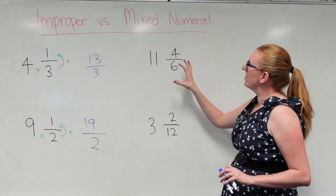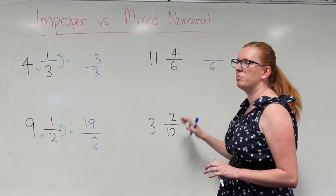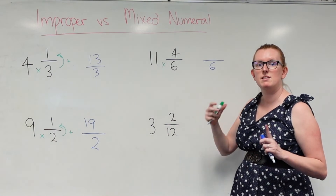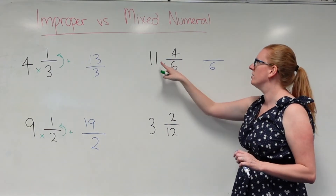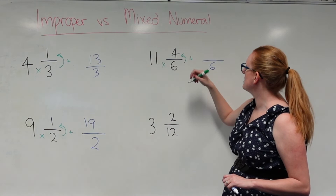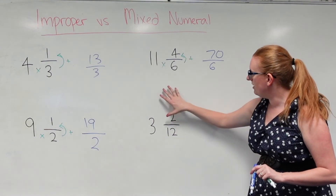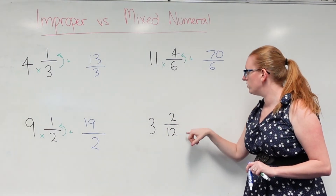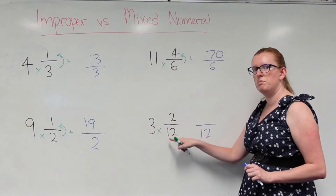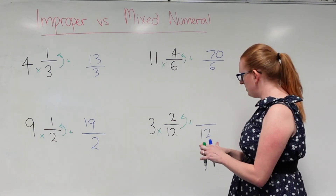Here I've got 11 and 4 over 6. I know my denominator is going to stay the same — it's going to be 6. I need to multiply 11 times 6 to find out how many slices were in the 11 eaten: 11 times 6 is 66, and then I add 4. So 66 plus 4 gives me 70 over 6. For this one down here I've got 3 whole and 2 over 12, so my denominator is going to be 12. Three 12s are 36, plus 2 is 38 — so 38 over 12.